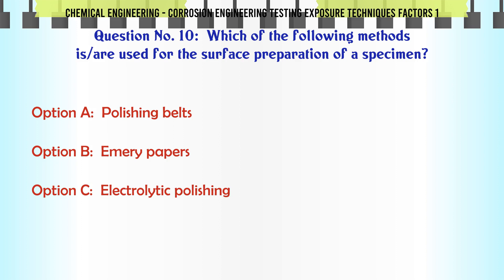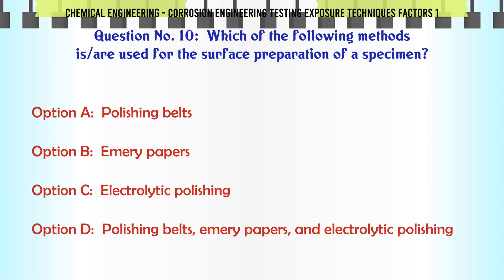Which of the following methods is/are used for the surface preparation of a specimen? A. Polishing belts. B. Emery papers. C. Electrolytic polishing. D. Polishing belts, emery papers, and electrolytic polishing.